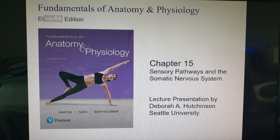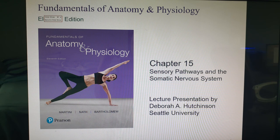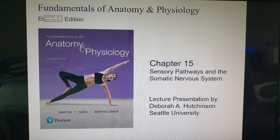Alright guys, if you're watching this video then you have made it — we have reached our last chapter for this semester. It's chapter 15 and it's going to be dealing with the different pathways for the sensory nervous system and the voluntary muscle system, comparing the two and how messages get from the central nervous system down to where they meet the peripheral nervous system.